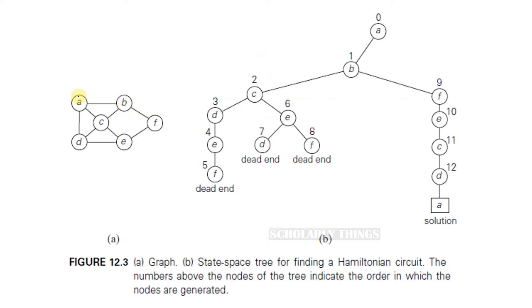Consider this graph as an example. Assume A is the root node, so we have to start with A and visit all the nodes and come back to A. This is the solution state space tree for this problem.